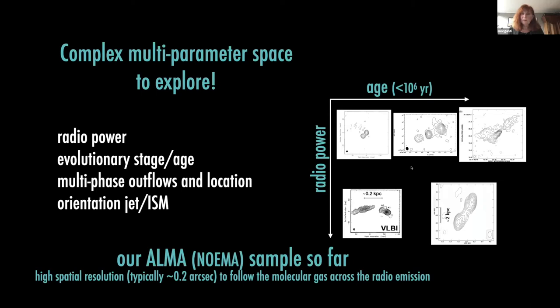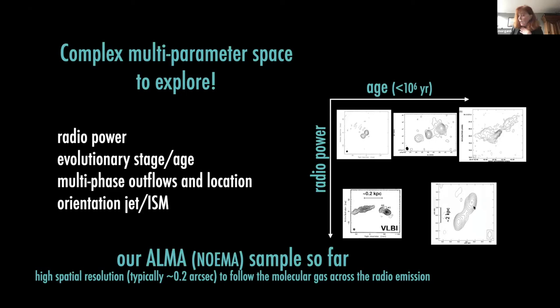You see here on the right the handful of objects we have been studying so far. As you can imagine, it is a bit of a painful job because you need high spatial resolution observations to trace the gas around your radio source — these are small radio sources, at most a few kiloparsecs. You need high spatial resolution, and ALMA is great for that, along with possibly multiple transitions of the CO line. That takes time, but what I want to show you now is the last object we have studied, from ALMA Cycle 6.